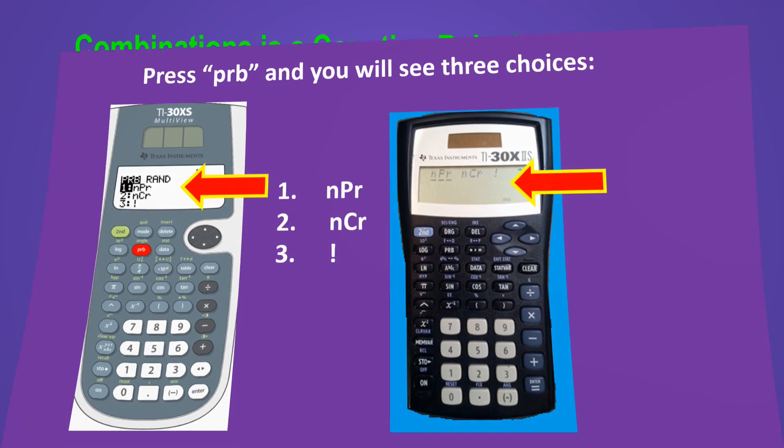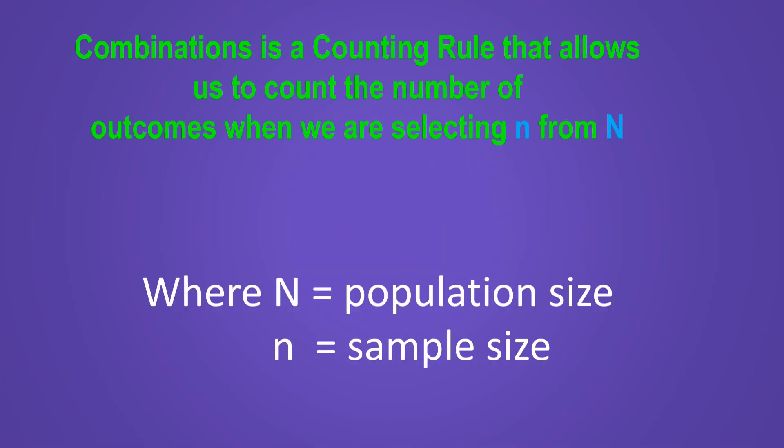So briefly, combinations is a counting rule that allows us to count the number of possible outcomes when we are selecting n objects out of N. Little n meaning the sample size out of big N meaning the population. The formula you might be familiar with looks like this. In this formula, we use big N for population size and the little n is for the sample size.